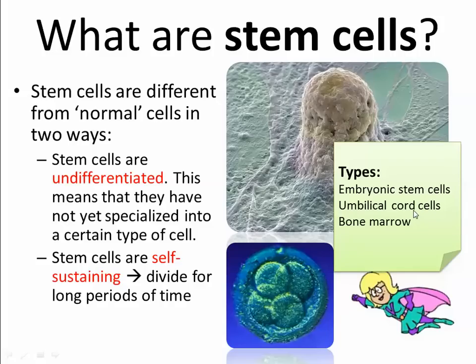A friend of mine who had a child was offered a hospital service to store the umbilical cord tissue for stem cells until the child turns about 15 or 16. The idea is that in the future, if some disease were found, the stem cells stored in the umbilical cord could potentially be used for treatment. It's very expensive though, and he and his wife turned down that option.